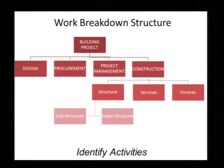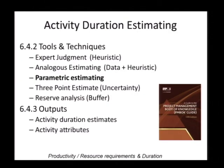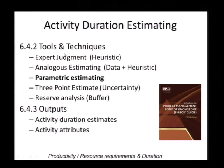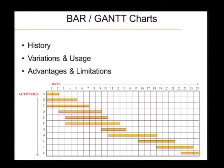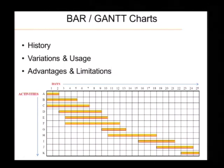To summarize, we discussed work breakdown structures and how to use them to identify activities. We discussed duration estimating and spent quite a bit of time on parametric estimating, while also understanding other means of estimating duration. We talked about bar charts and Gantt charts — their history, variations in usage, advantages, and limitations — and expressed a schedule in a bar chart format.